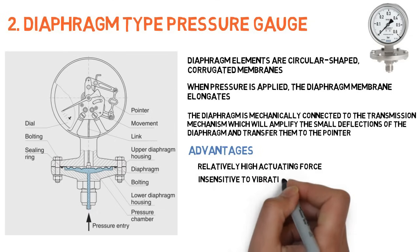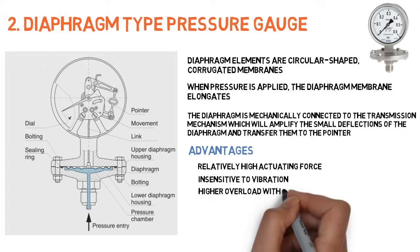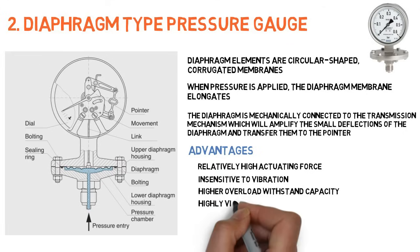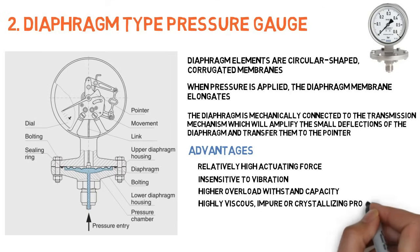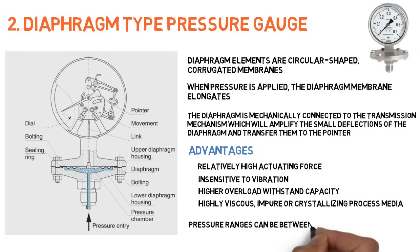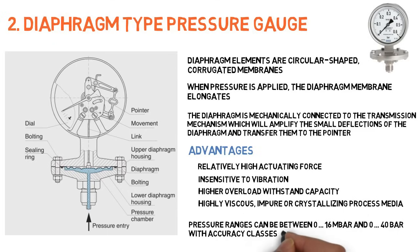The diaphragm element can be subject to higher overload. It is used for measurements with highly viscous, impure, or crystallizing process media. Pressure ranges can be between 0 to 16 millibar and 0 to 40 bar, with accuracy classes from 0.6 to 2.5.